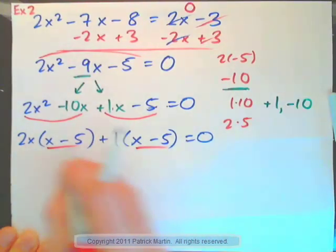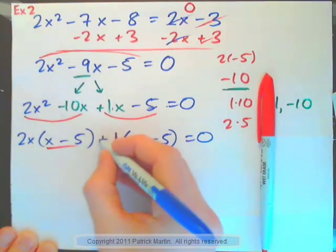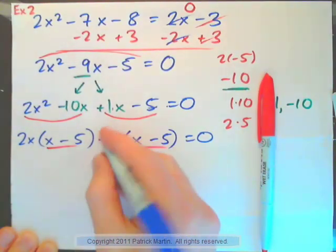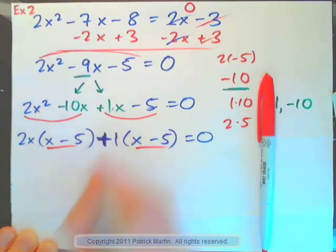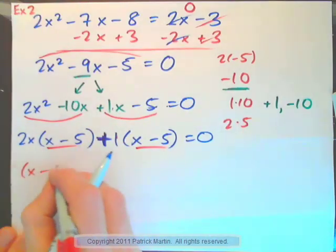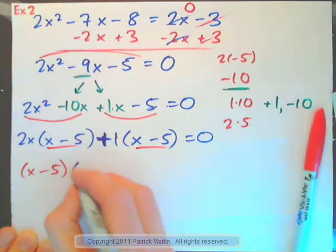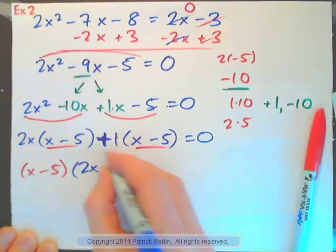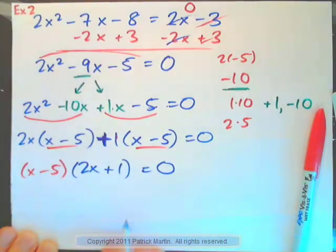So, now the x minus 5 is the greatest common factor between the two terms that are added here. See, there's an addition here. You must always have that there. Now, I can pull out the x minus 5. And x minus 5 times 2x plus 1 gives the top. And that's equal to 0.